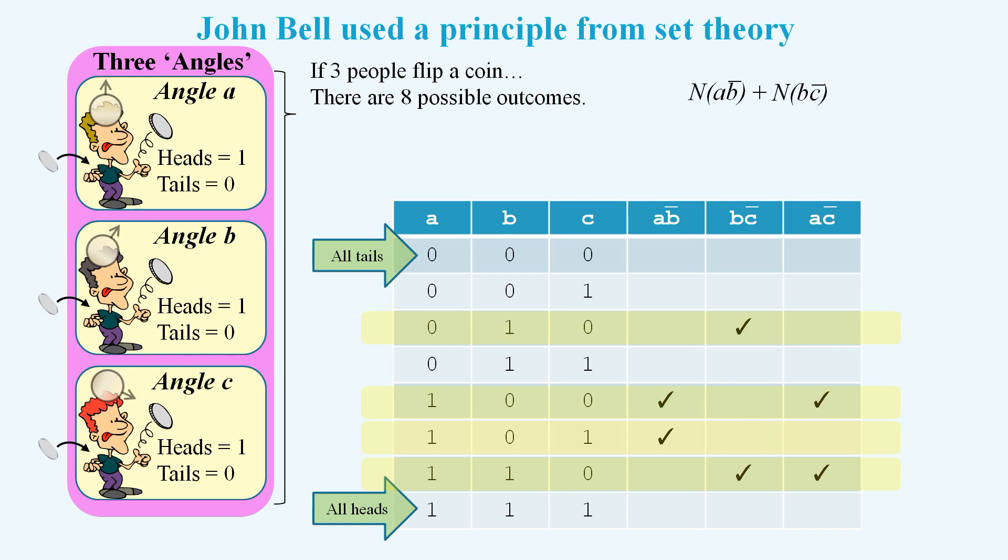But now consider the count for A flipped heads and C flipped tails. Since both the relevant rows are already part of the four rows we've already counted, we know that this count cannot exceed the count for all four rows. Mathematically, we can say that the sum of the first two counts must be greater than or equal to the third count. Indeed, if all three people flip at the same time, then it's impossible to violate this inequality.